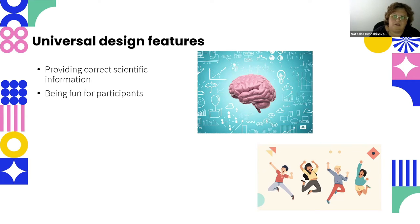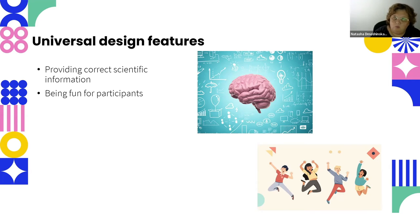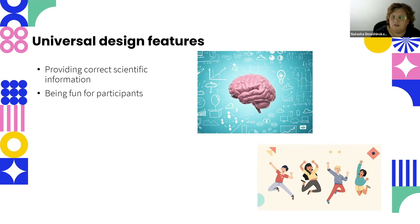Another consequence of wrong information: if people later discover the correct scientific information and it contradicts what they were told earlier, they start disbelieving science — it creates more misconceptions and confusion, exactly what any learning activity is trying to prevent. The second universal feature is that since this is informal learning outside formal planning and curricula, participants must be motivated to engage, and the best motivation in these circumstances is interest — it should be fun and interesting for them, otherwise they simply won't do it.